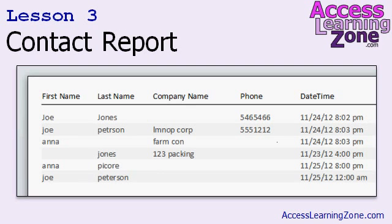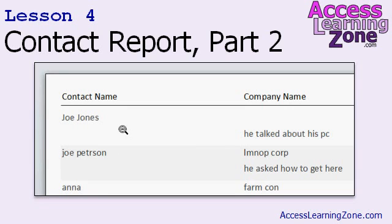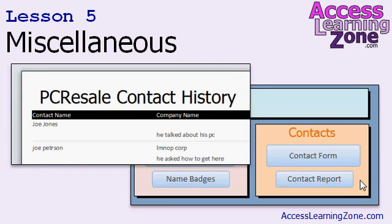In lesson three, we're going to learn how to create a contact report. We're going to see how to build a report from scratch. In lesson four, we're continuing with the contact report. We're going to learn about the can grow, can shrink properties and string concatenation. In lesson five, we're finishing up with our contact report. We're going to cover a bunch of miscellaneous topics, including line thickness, page numbering, section background colors, report headers and footers, and lots more.